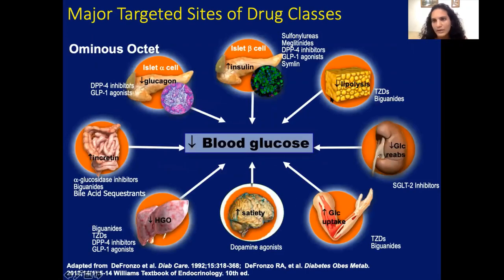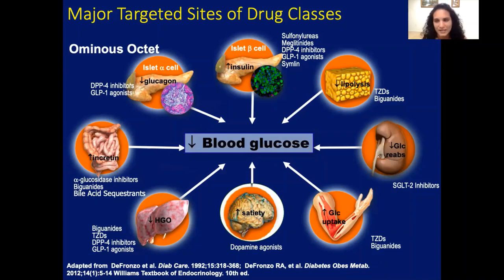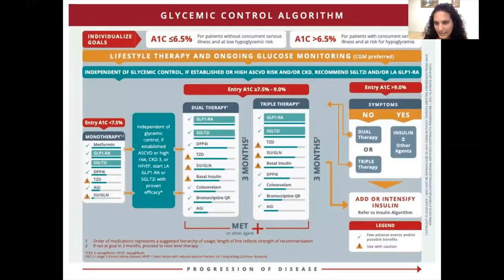When we look at what anti-diabetic agents to use, we have lots of choices. When I was a fellow there were maybe five or six choices, but now we have 12 classes of medication targeting different sites involved in the pathophysiology of diabetes. So which one do you pick? There are the ACE guidelines — I'm also on the guidelines committee — and the ADA guidelines, which most of us use. The ACE guidelines are from the American Association of Clinical Endocrinologists, and they illustrate a different way of looking at things.